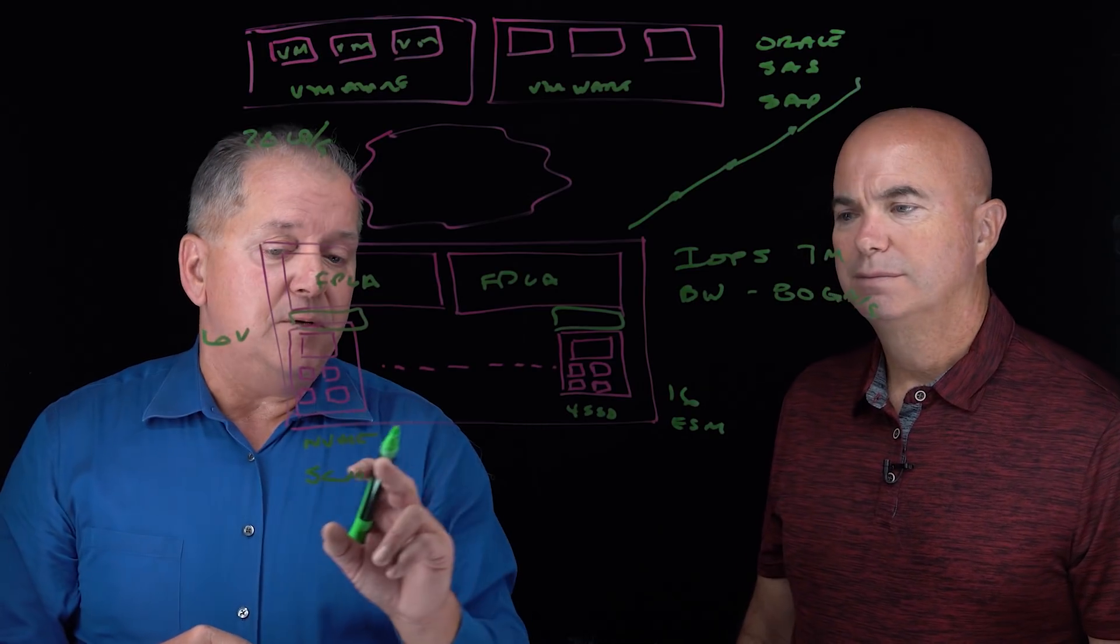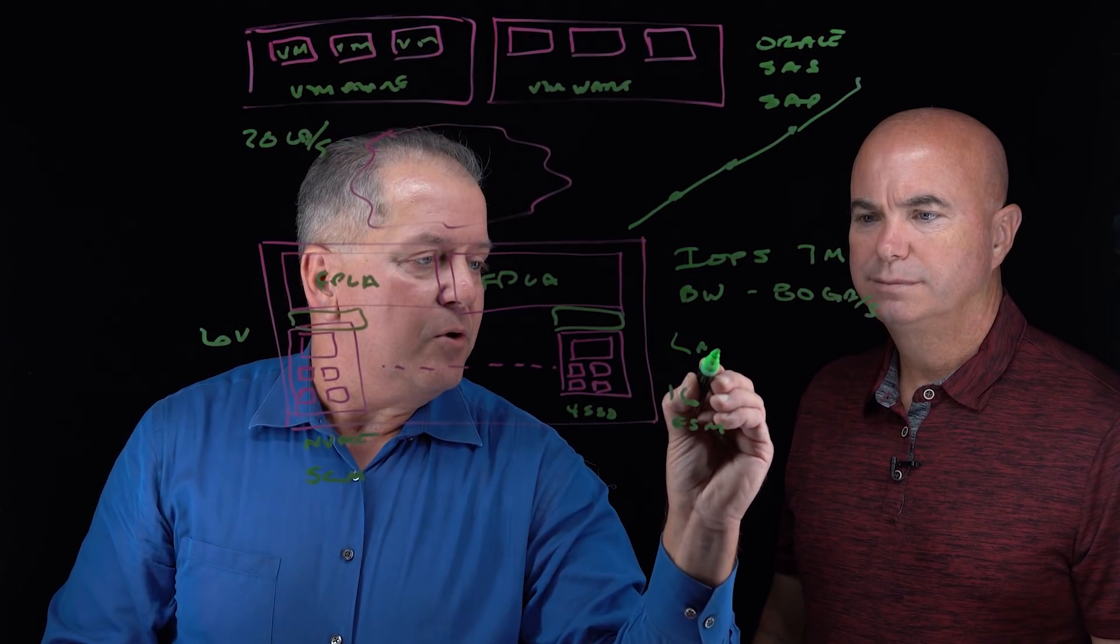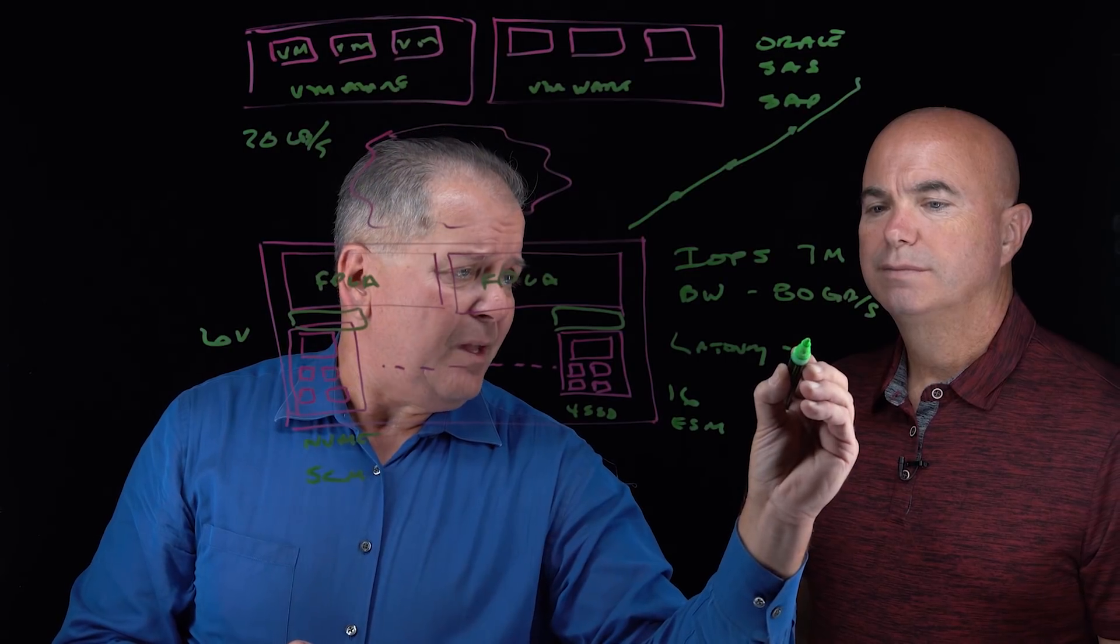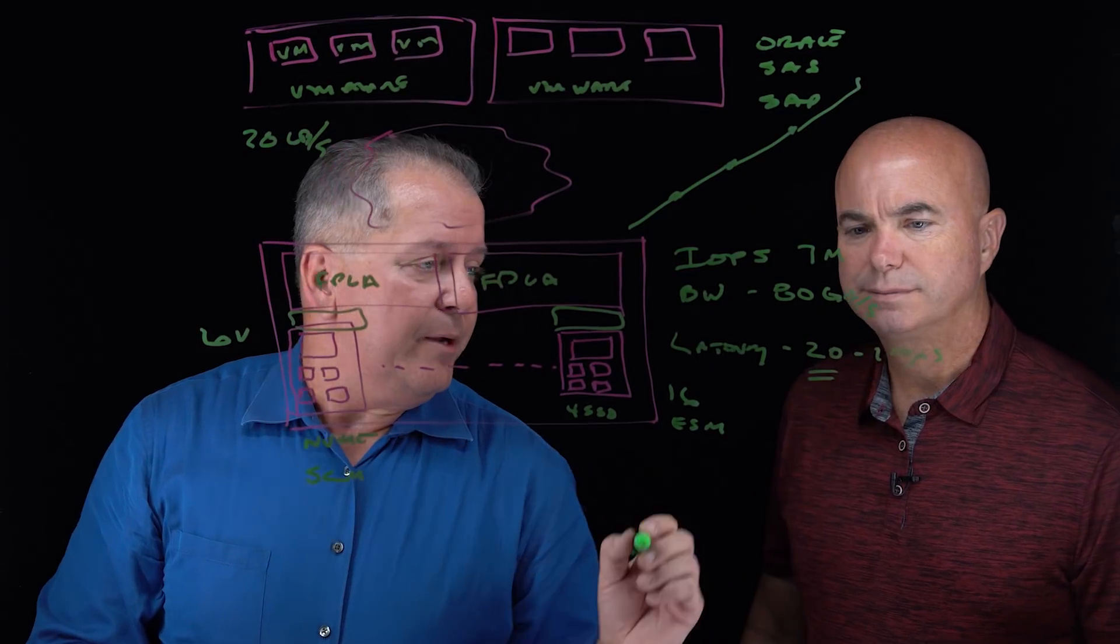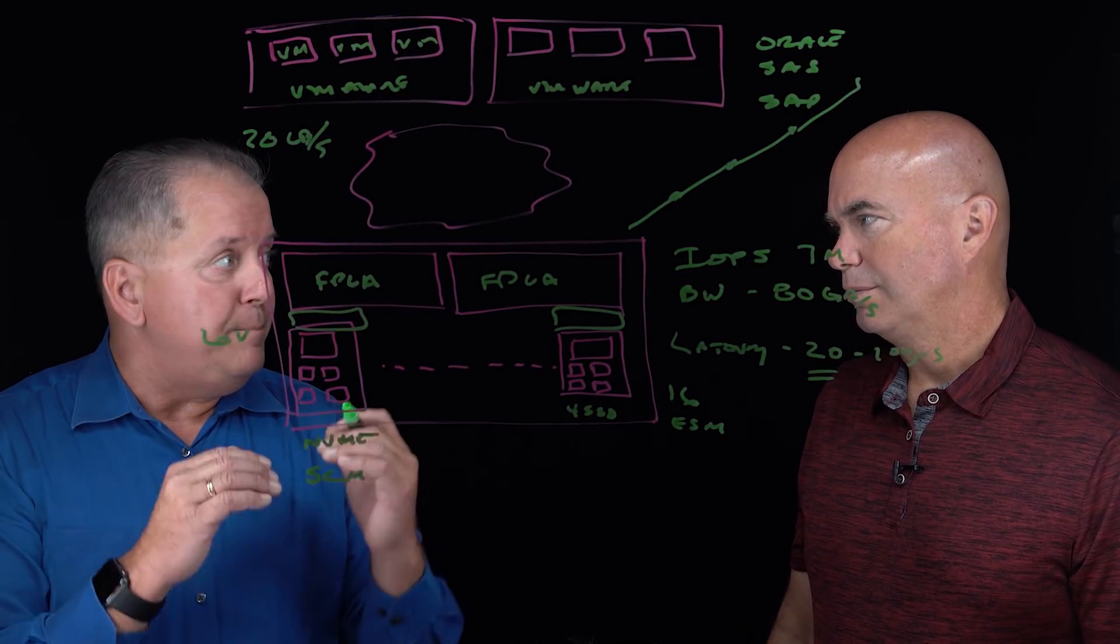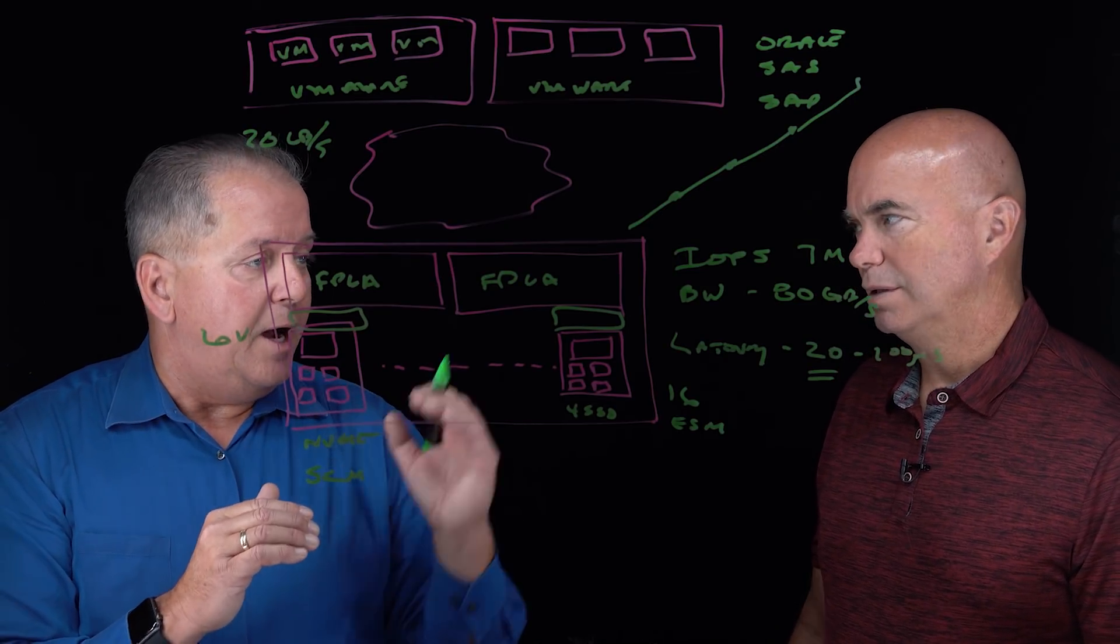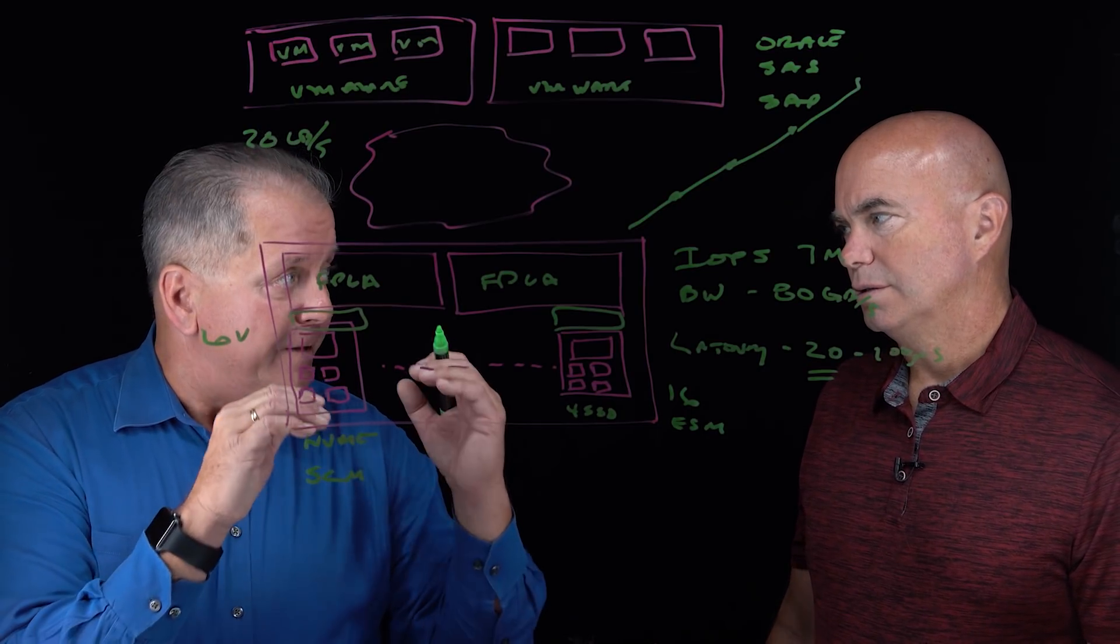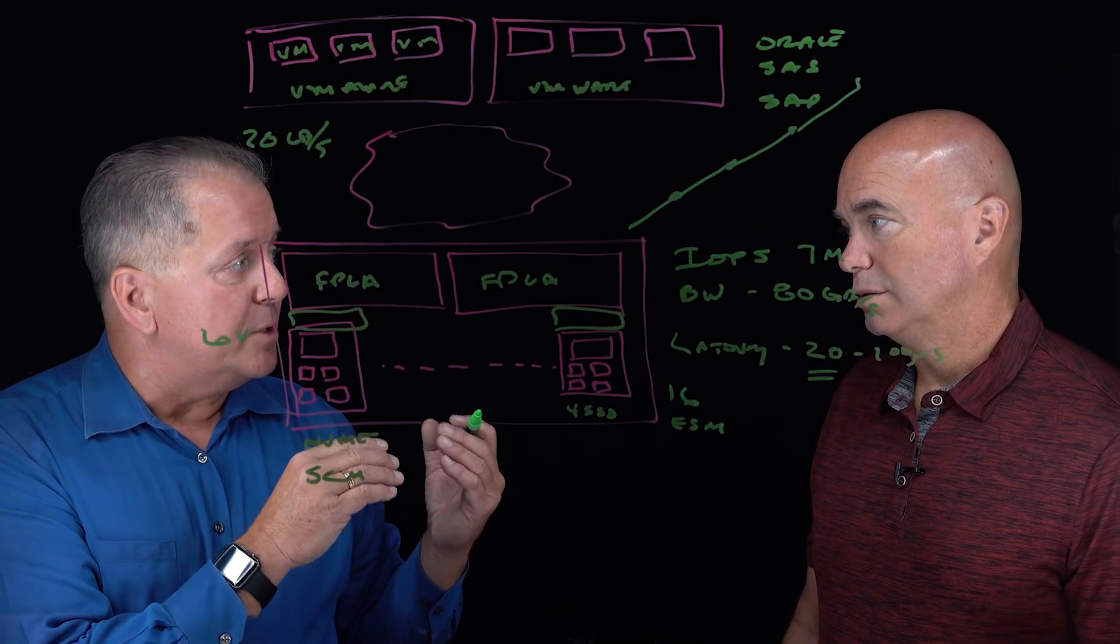So a lot of times, especially when we're talking about just taking advantage of NVMe, I can run latency out across these systems that is, in many cases, about 20 to 100 microseconds. When I'm talking 20 microseconds, that's with storage class memory. So if I have Intel Optane, the media itself gives me about 15 microseconds of write latency and about 30 microseconds of read latency. So when I'm talking about storage class memory, I'm getting very, very good latency.